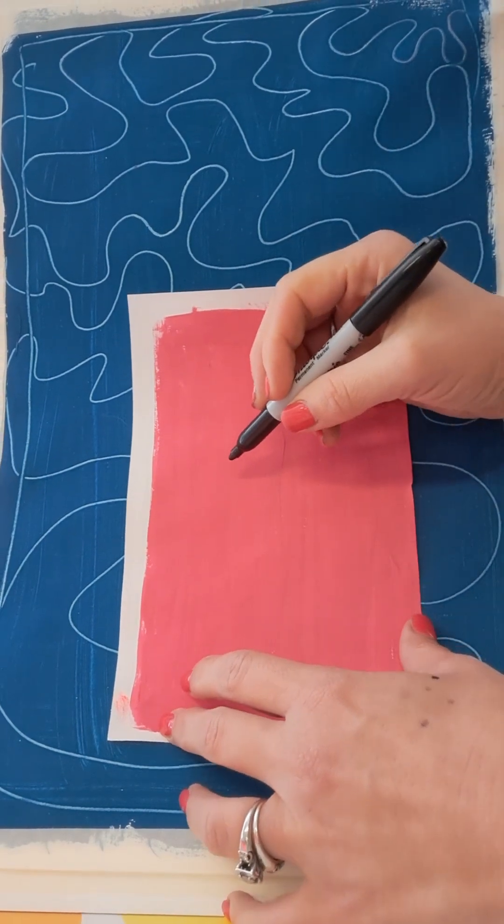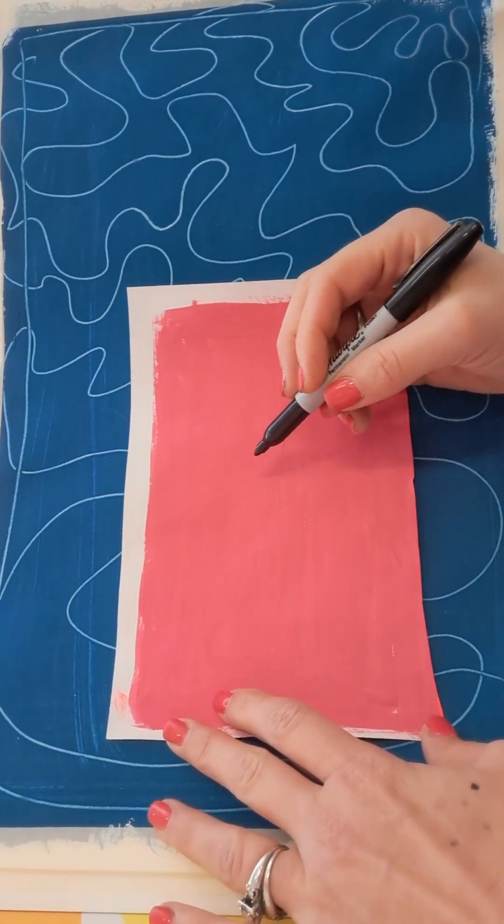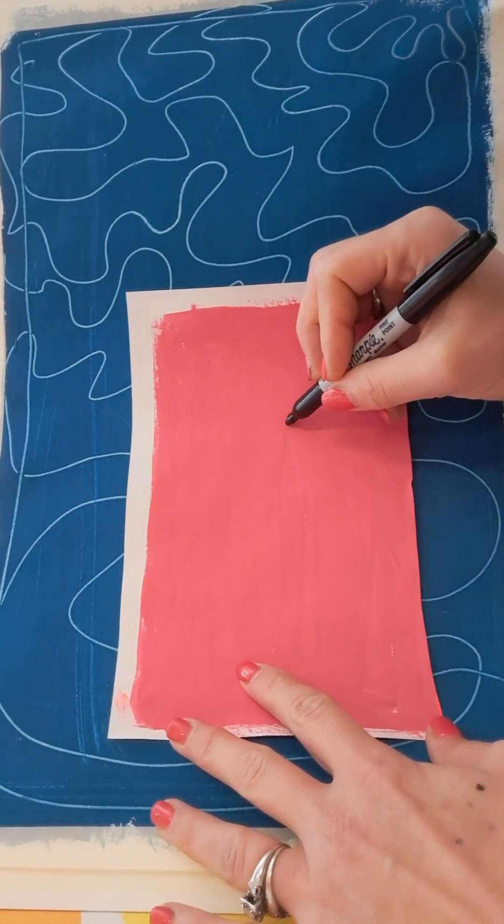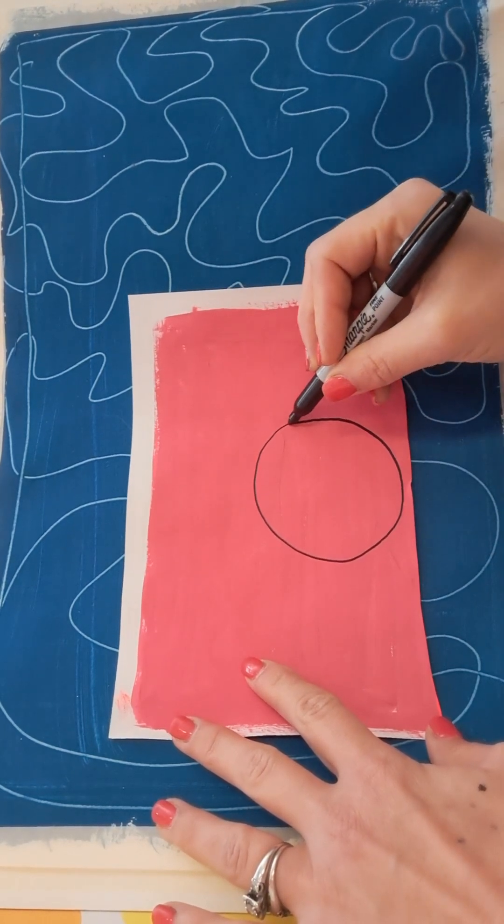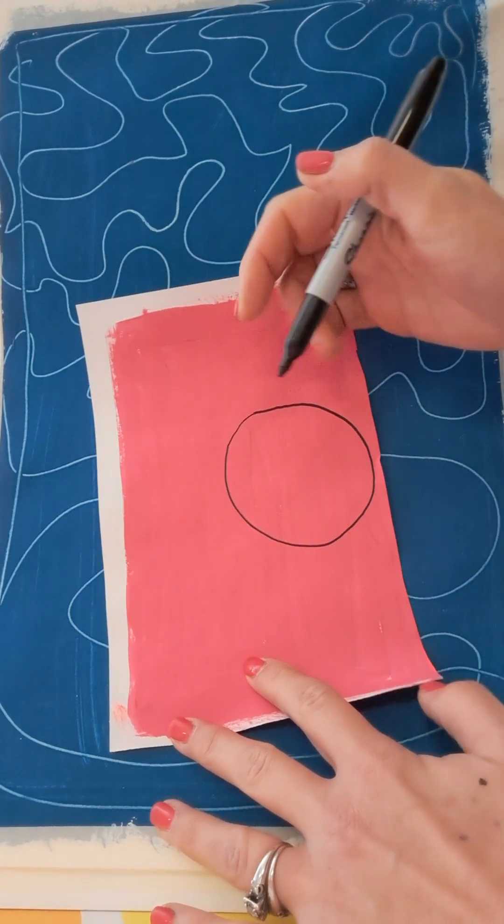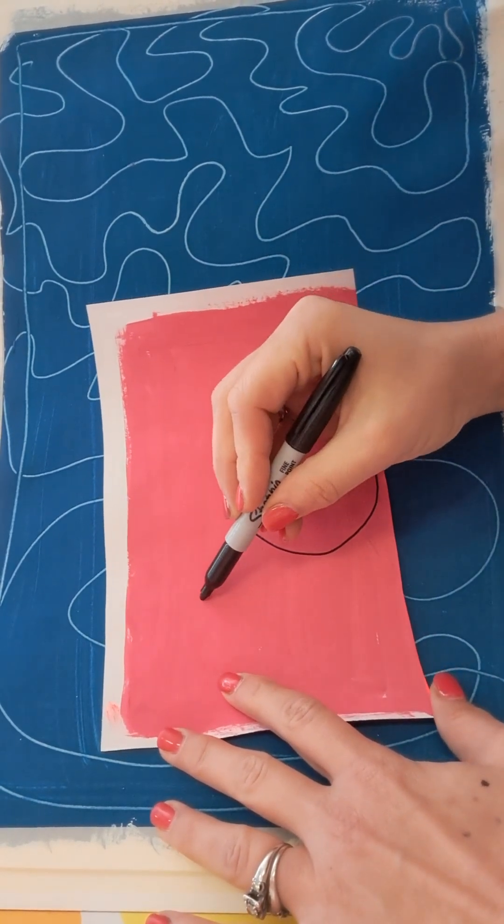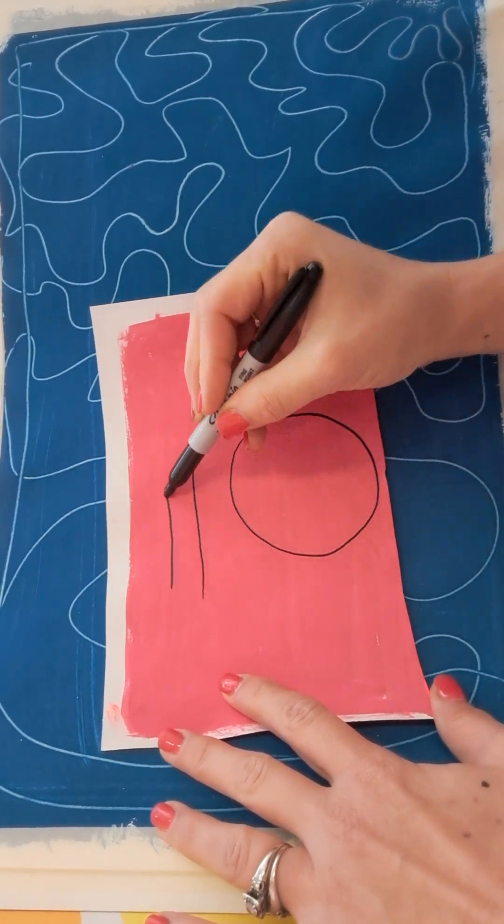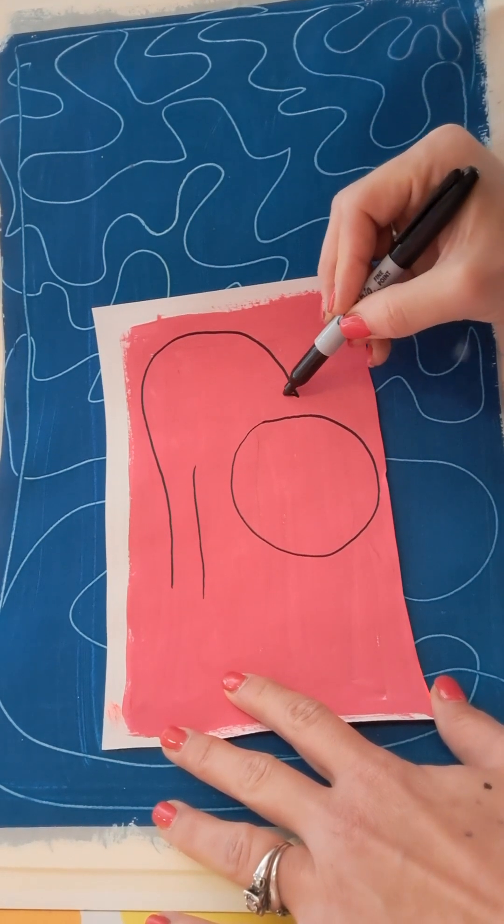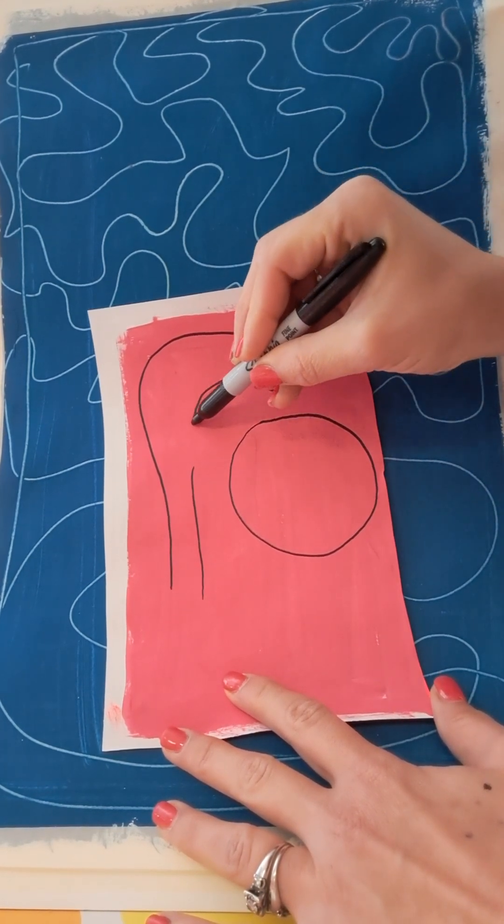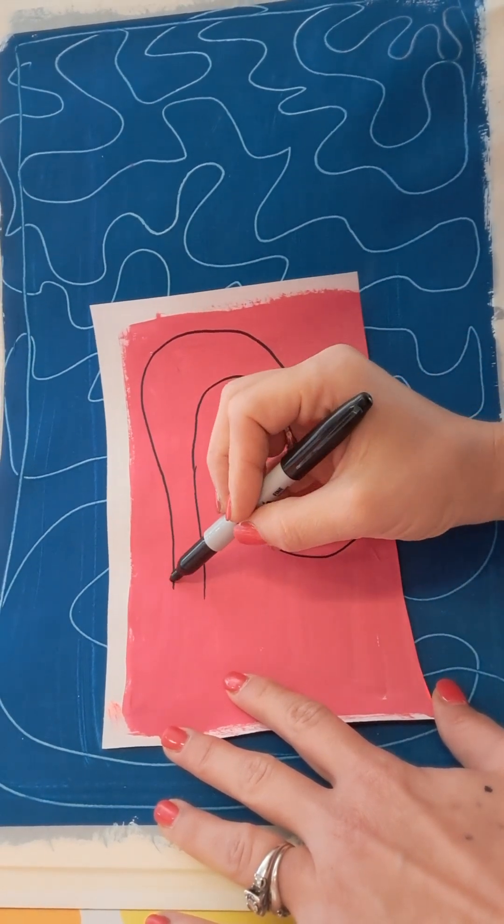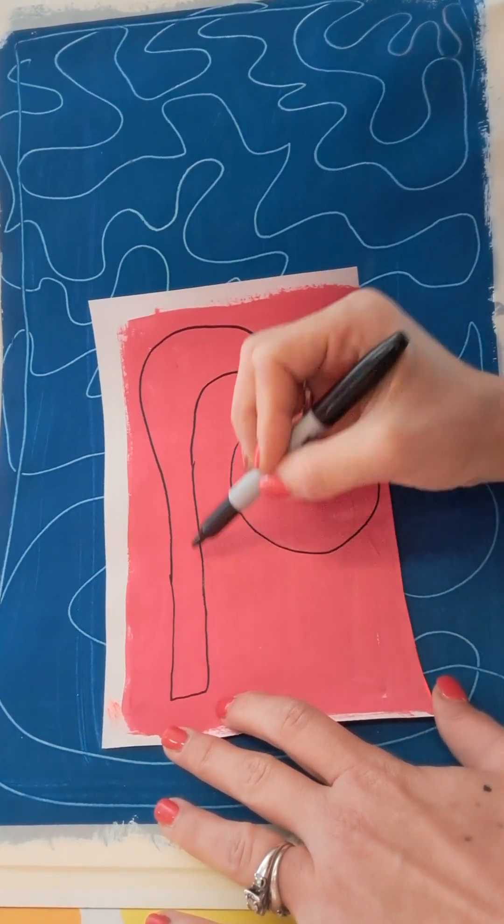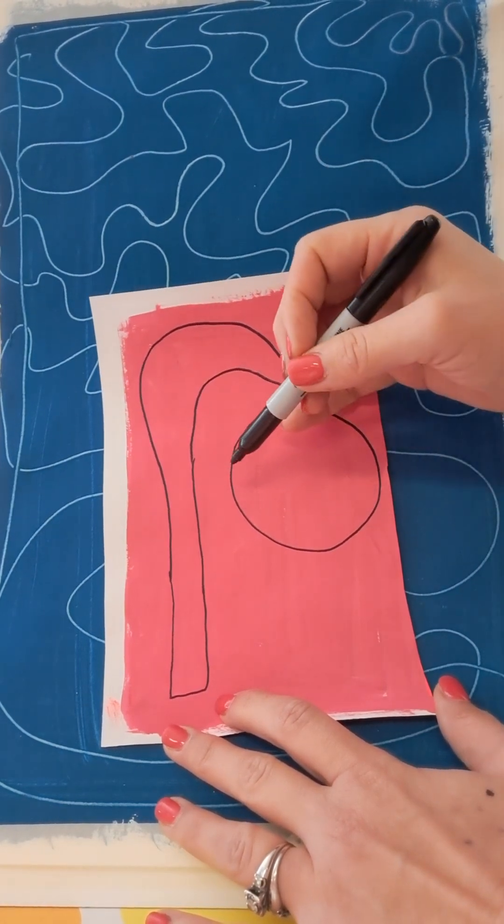So here are the shapes that you're going to need. So you're going to need a large circle that's going to be for his belly. Okay, you're going to need the shape for the head which is going to look something like that.